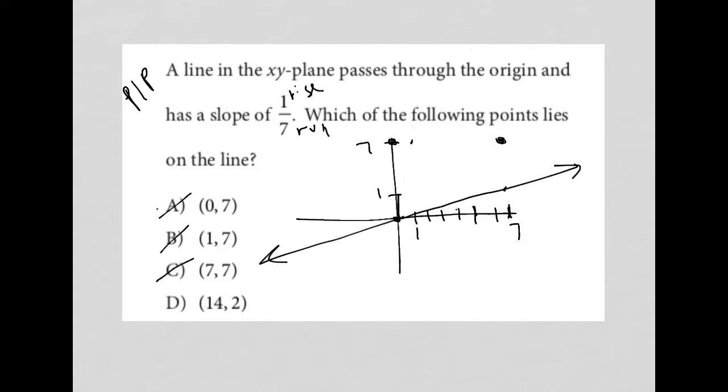Which means D, by default, has to be the right answer. But let's just check it out. So 14, 2 would mean I have to extend my X axis all the way down to 14, and then I'm up to 2 here. And it's really the only one that makes any sense, even if our line isn't perfectly drawn and 14, 2 doesn't perfectly land on it based upon the fact that you're not using graph paper. It truly is the only option that gets even close to being on the line, so therefore D must be the correct answer.